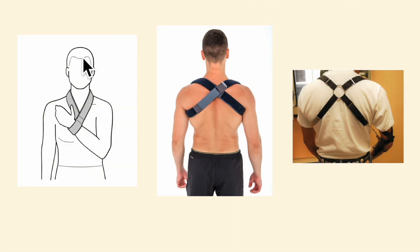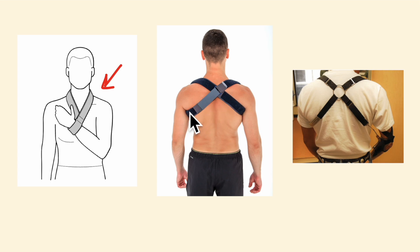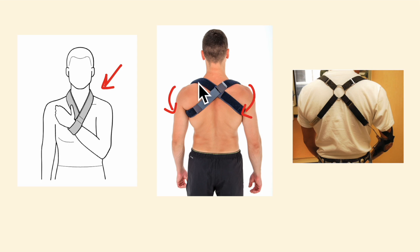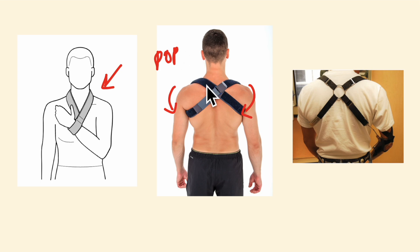For conservative treatment of clavicle fracture, a cuff and collar sling is used for undisplaced fractures. Strapping is done after reduction of the fracture, and a figure-of-eight bandage helps to retract the shoulder girdle and minimizes overlap. There is also the Billington yoke method, in which plaster of paris is applied over a well-padded figure-of-eight dressing — not a sling, but over the dressing.